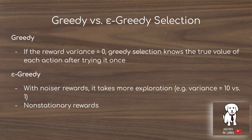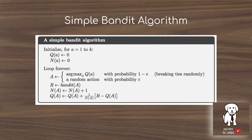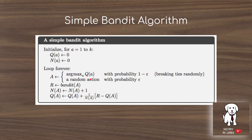The simple bandit algorithm either takes the maximum action with probability (1 − epsilon) or takes a random action with probability epsilon, then updates the sample average for that action to adjust its estimated value.